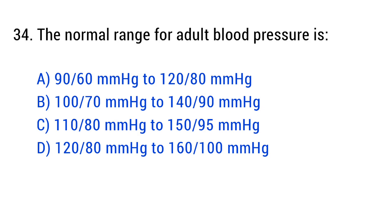Question number 34. The normal range for adult blood pressure is? The right answer is option A: 90/60 to 120/80 mmHg.